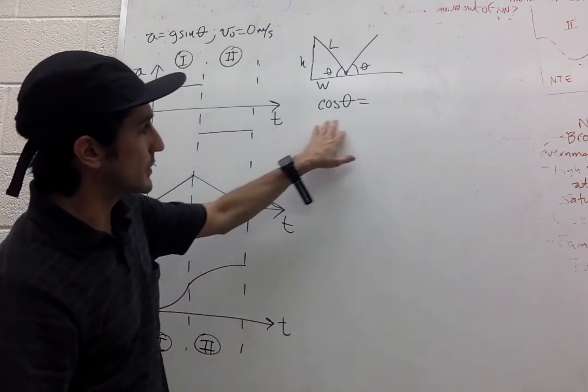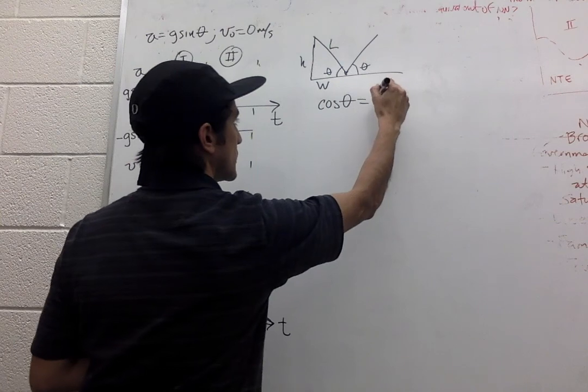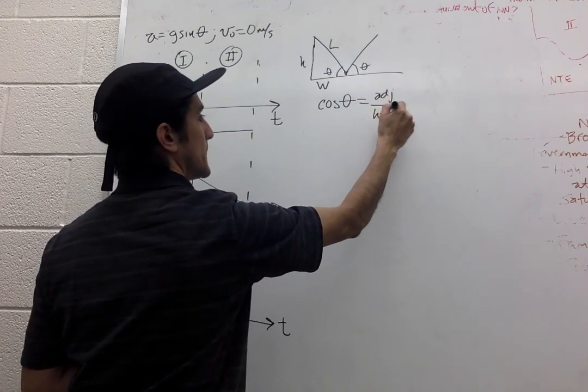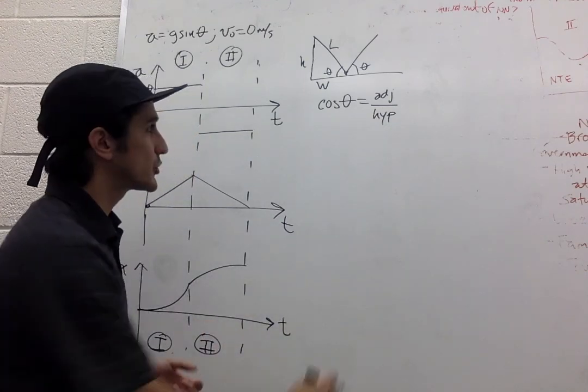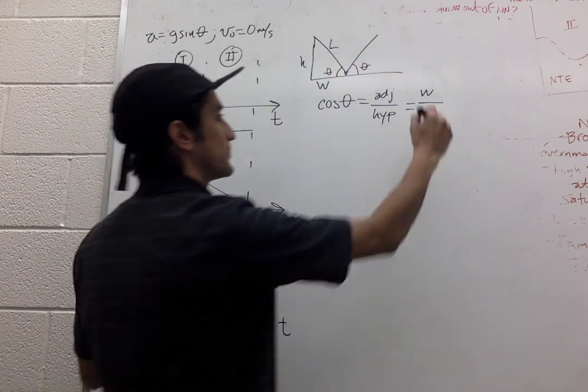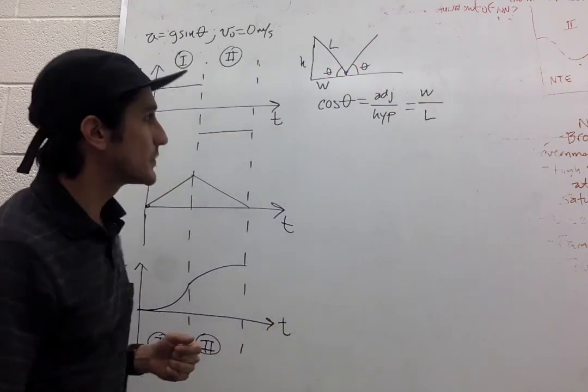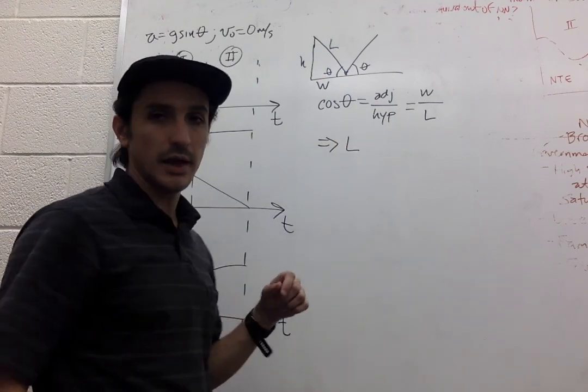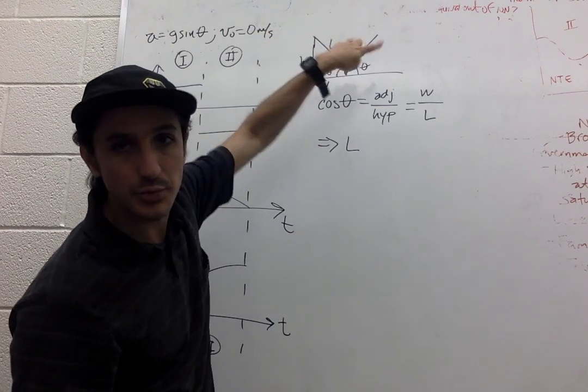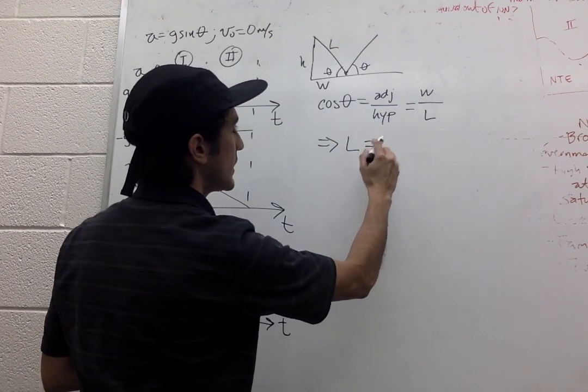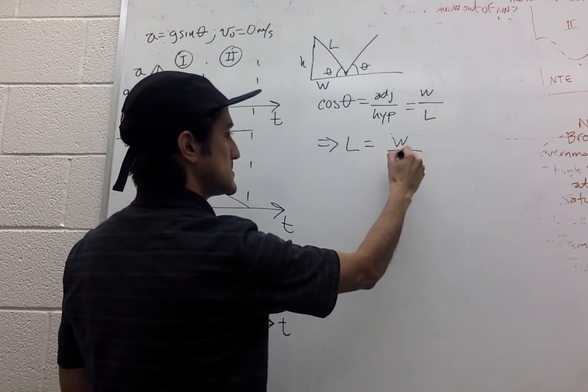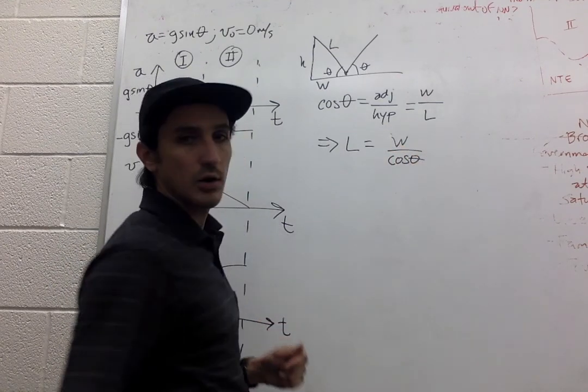And we know that the definition of cosine of theta is the adjacent side over the hypotenuse. So the adjacent is W, the hypotenuse is L. This means that L, which is the distance that the bike is actually going to go through, is W over cosine theta.